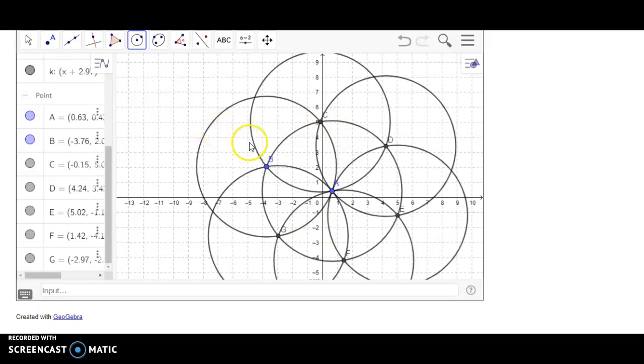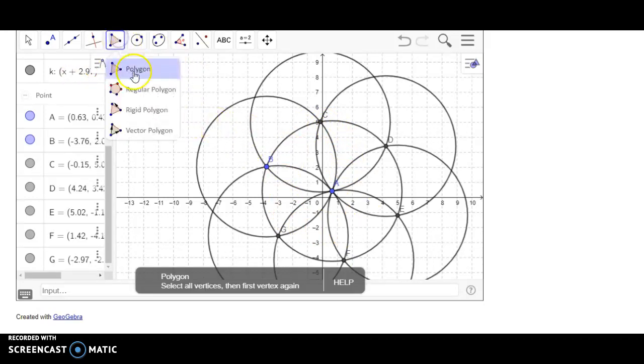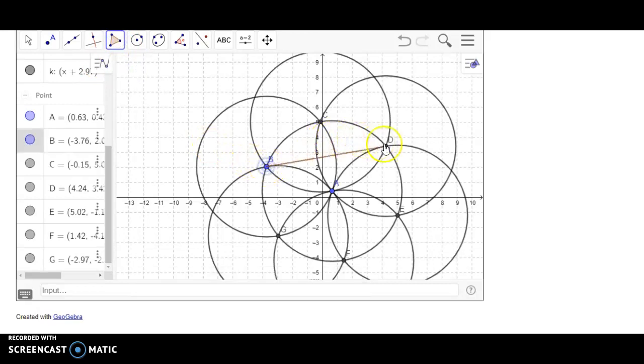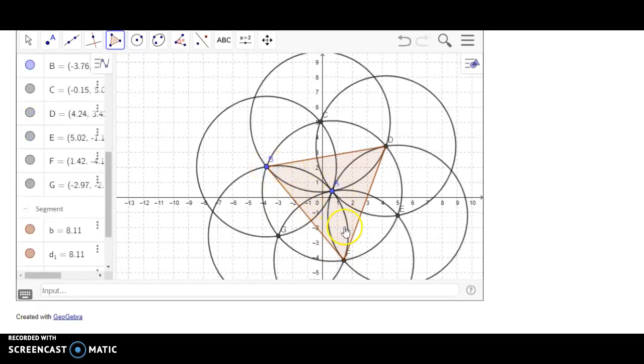And now to make our triangle, we are going to connect every other intersection point. And there is our equilateral inside of our circle, which is right here.